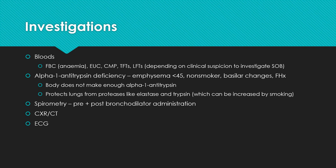It's important to consider alpha-1 antitrypsin deficiency, especially in those under 45, with no smoking history, or with a family history of COPD. The WHO actually recommends that all those diagnosed with COPD should be screened for it. The basic process is that alpha-1 antitrypsin protects the lungs from proteases like elastase and trypsin, so a deficiency leads to destruction of alveolar walls — very similar to what you see in emphysema.